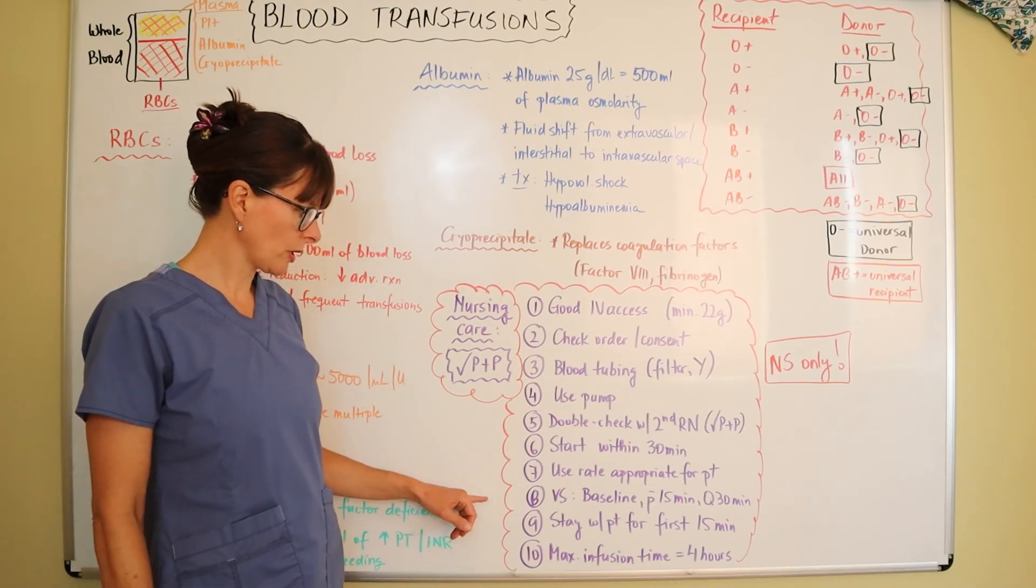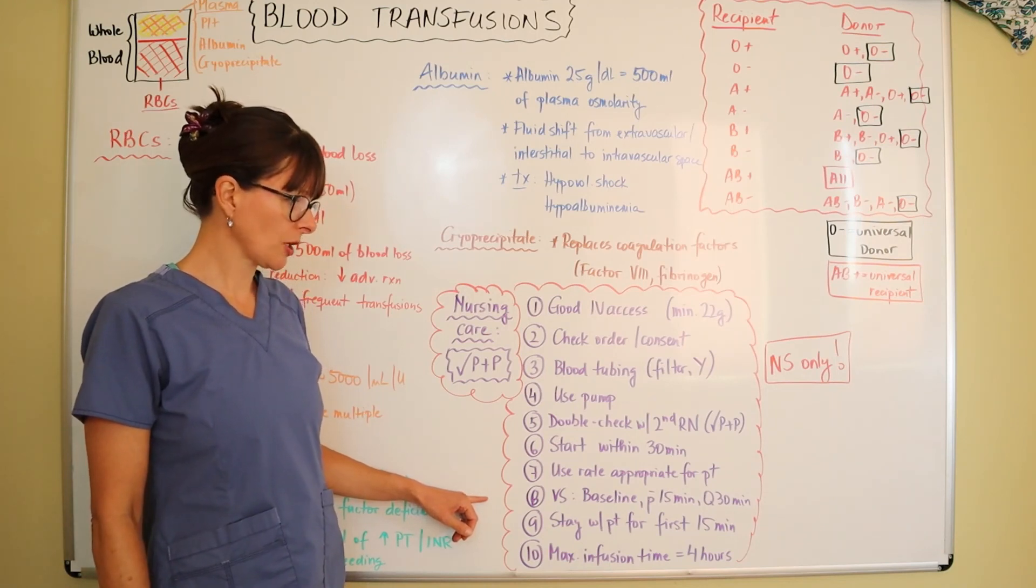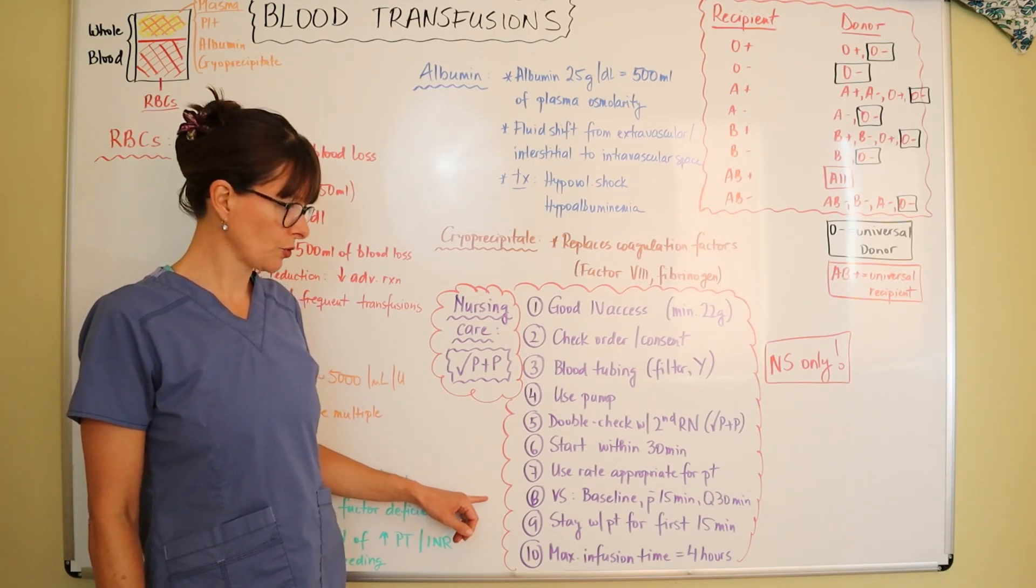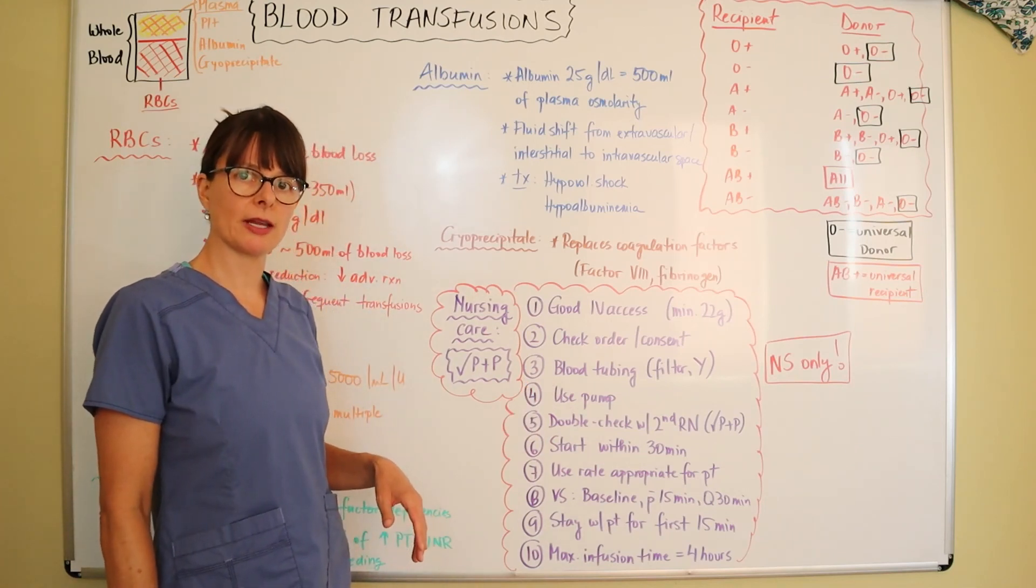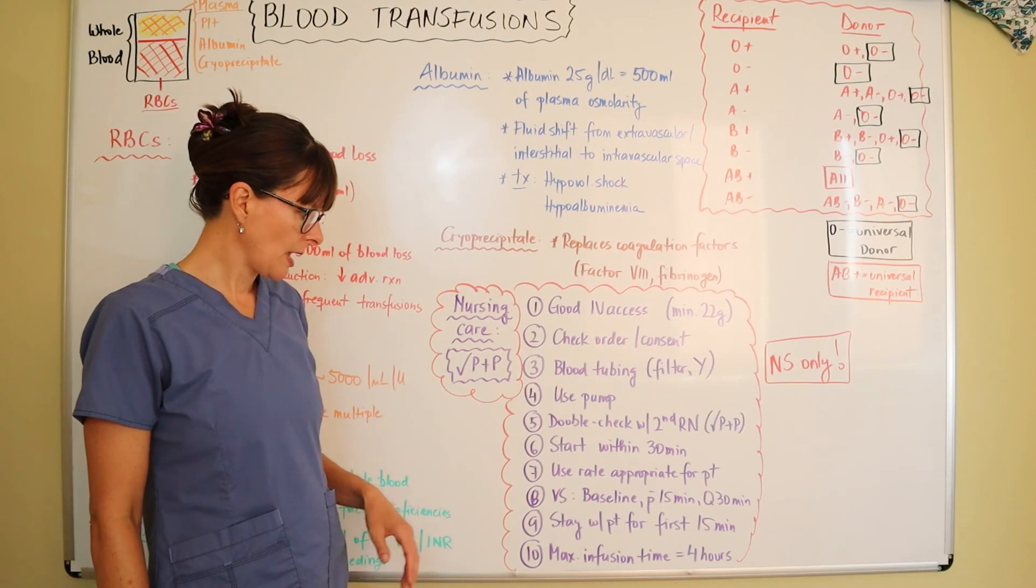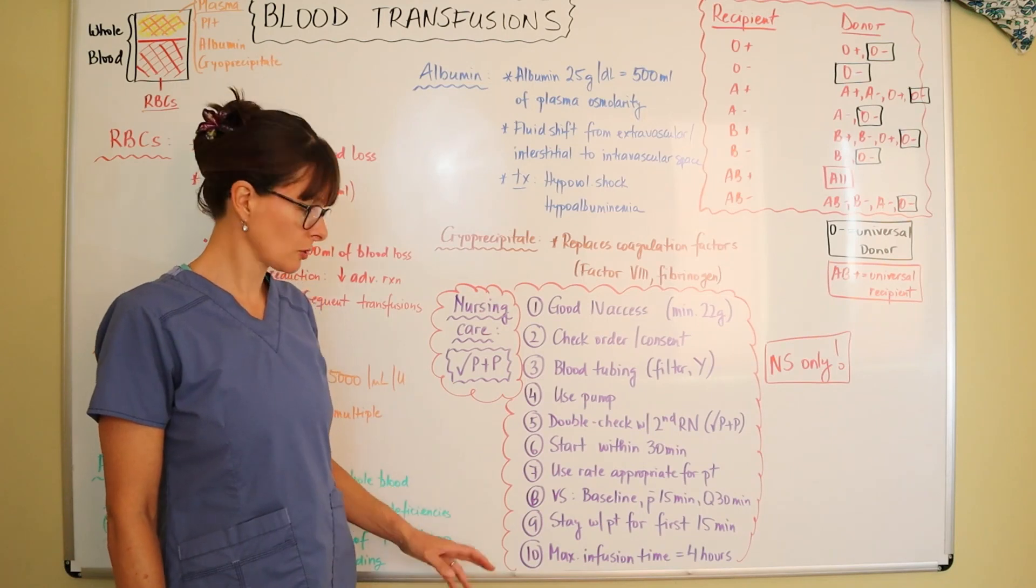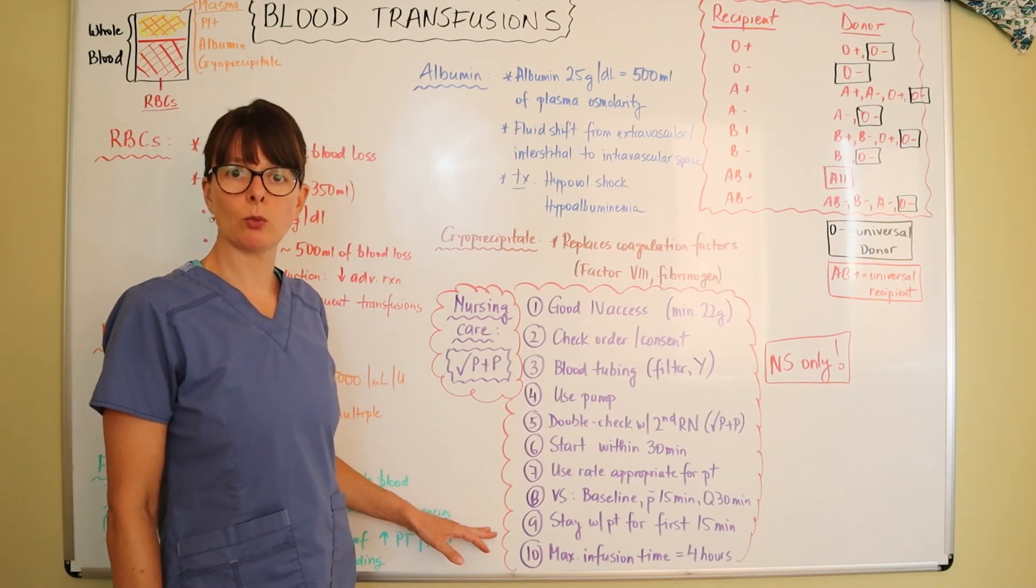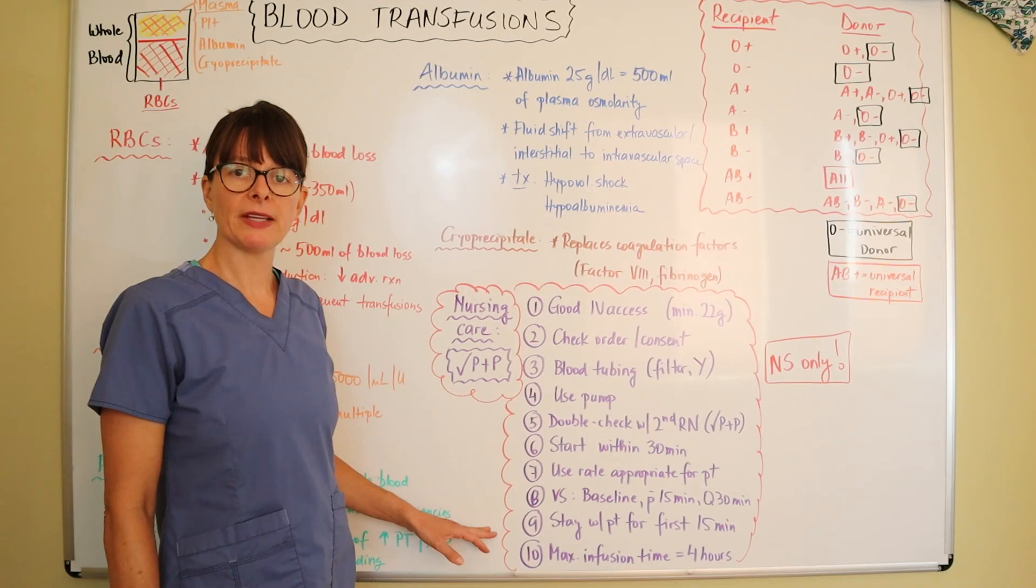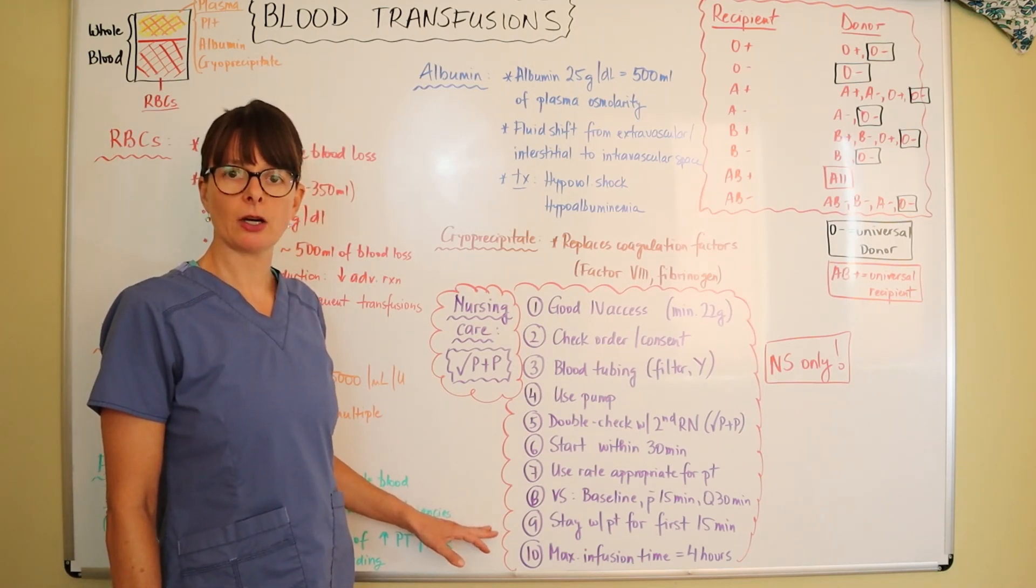For vital signs, we want to obtain a baseline set of vital signs including a temperature that's very important. Then check the vitals again after 15 minutes of the start of the infusion, then typically every 30 minutes to one hour depending on your policy and procedure and the patient's status. If an adverse reaction occurs, it typically occurs in the first 15 minutes. So you want to stay with your patient for the first 15 minutes, educate them about what you're doing and what signs and symptoms to watch out for so you can intervene right away if something happens.